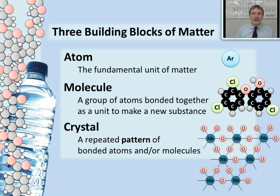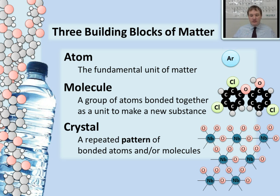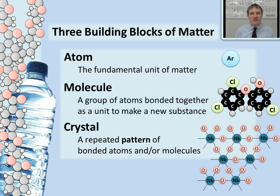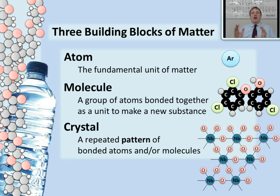And finally, a crystal is a repeated pattern of atoms or molecules — or atoms and molecules — all bonded together in a crystal lattice network. This is niobium oxide, a substance that's probably used in your cell phone in tiny little devices called capacitors. Niobium oxide, this crystal, is really great at holding an electric charge that can be released when a circuit chip tells it to release that electric charge.